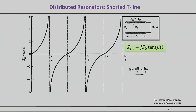Here's a transmission line — it can be microstrip, CPW, anything you want. If you short it and look at the impedance at the input, you can use the transmission line impedance equation we derived before. If you plot the tangent of βL, or the absolute value of impedance, you get the curve shown here. There are certain resonances: this transmission line section has a resonance at π/2 (90 degrees electrical length), at π, at 3π/2, and so on.